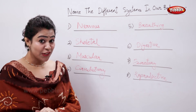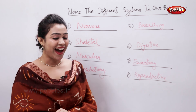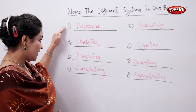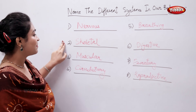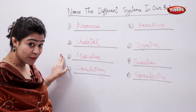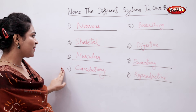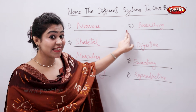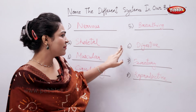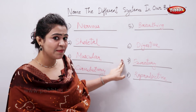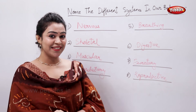So the different systems in our body are: nervous system, skeletal system, muscular system, circulatory system, breathing system, digestive system, excretory system, and reproductive system.